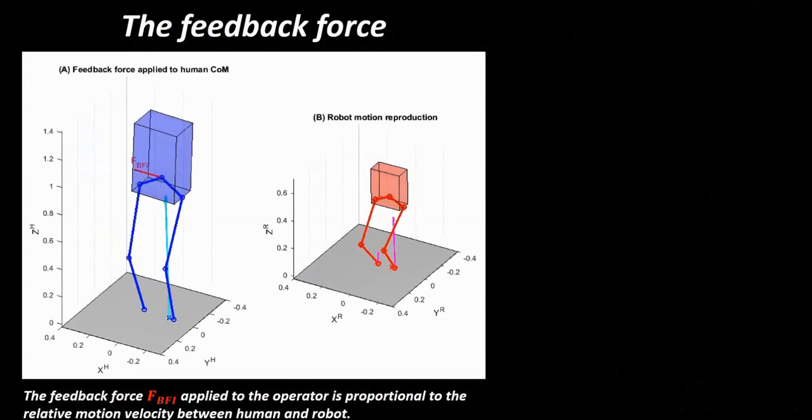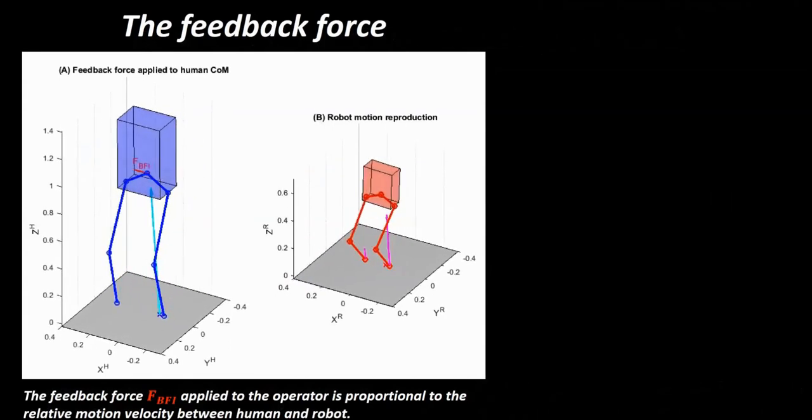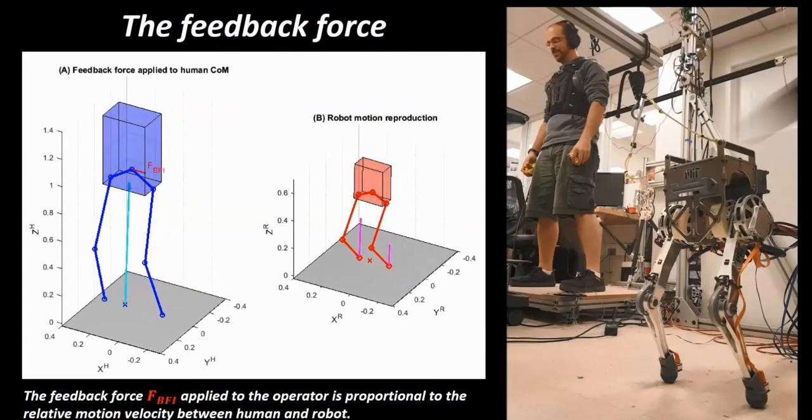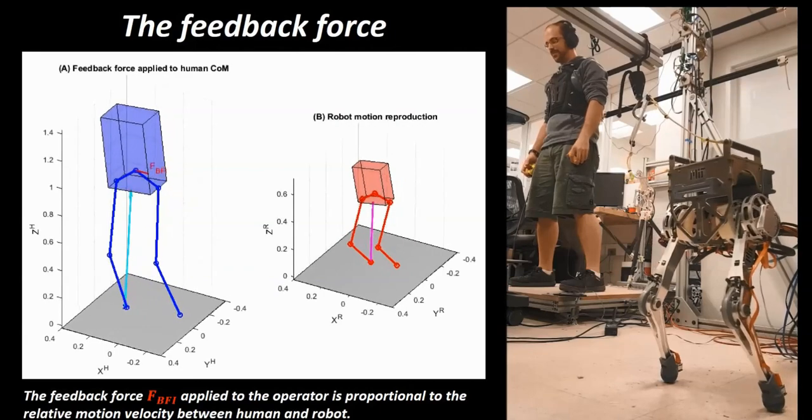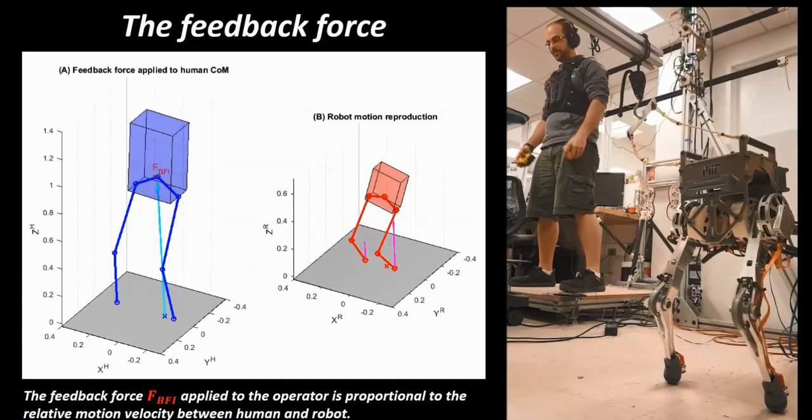Additionally, a feedback force, shown in red, is applied to the operator to make sure that the human movement is synchronized with the motion of a much smaller and lighter robot. This force is proportional to the relative motion velocity between human and robot.